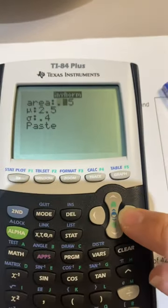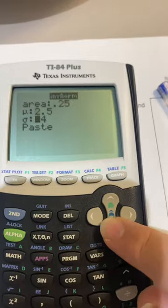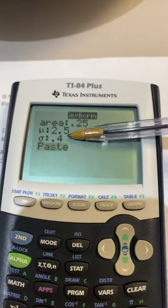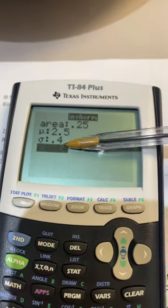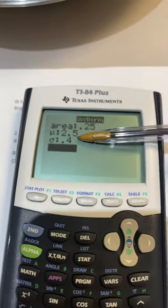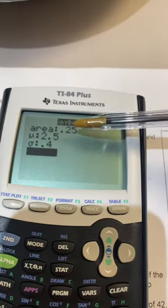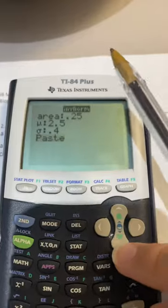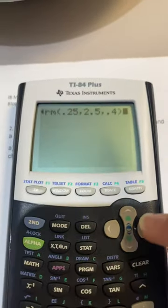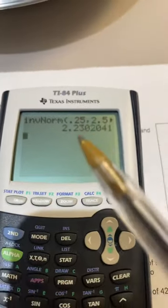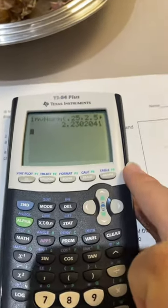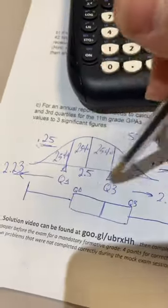We should plug in the following values: 0.25, 2.5, and 0.4. The 0.4 is our standard deviation, 2.5 is our mean, and 0.25 is the first quartile we're looking for. Next, we click paste and then enter. This gives us the number we're looking for, which is 2.23, our first quartile.